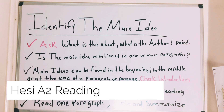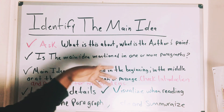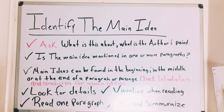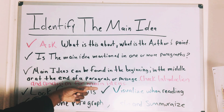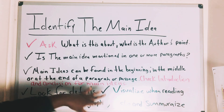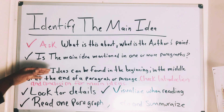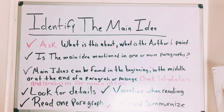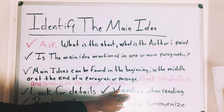Alright, so identifying the main idea — you want to keep in mind these particular points. Ask yourself: what is the author's point? What is this paragraph about? On the HESI, the paragraphs are very short, terse, and to the point — like two or three paragraphs, that's it. The main idea is mentioned in one or more paragraphs, and it can be found in the beginning, middle, or end of a paragraph — the introduction or the conclusion.